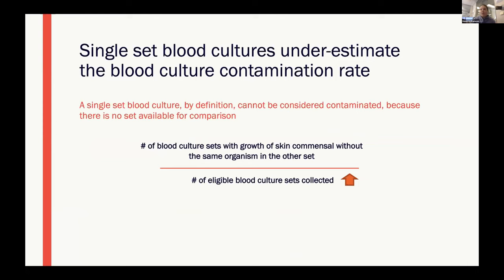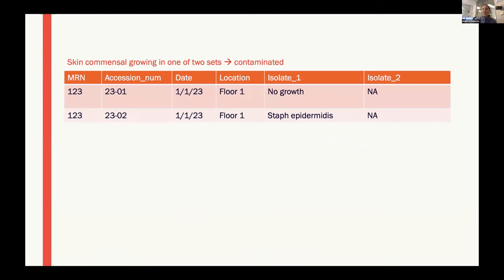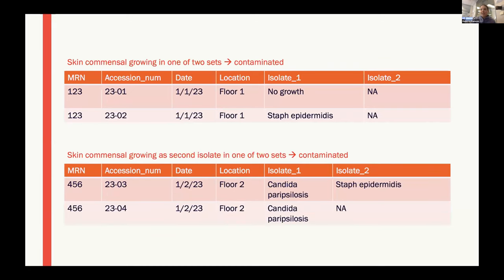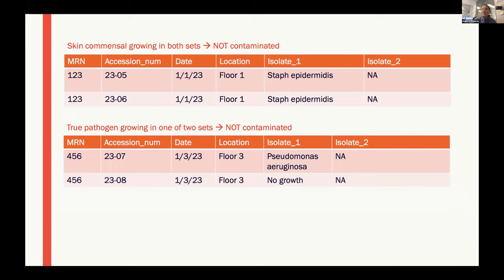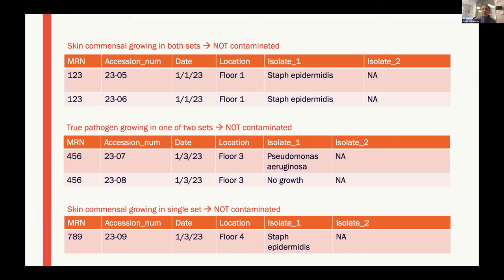Let's go through a few scenarios. If a skin commensal like Staph epidermidis grows in one of two sets, that set is considered contaminated. If both sets grow a true pathogen like Candida parapsilosis but one set also grows Staph epidermidis, that set is considered contaminated even though it also identified a true pathogen. If a skin commensal grows in both sets, we consider it a true pathogen and neither set is contaminated. If a true pathogen grows in one of two sets, neither is contaminated. And if a skin commensal grows in a single set where only one set was drawn, it's not considered contaminated because there's no comparison set.